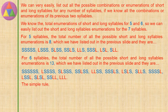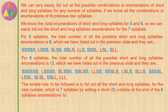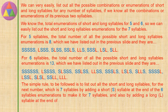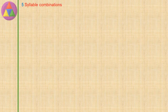The simple rule is: to get all enumerations for seven syllables, add a short syllable S at the end of all six-syllable enumerations (giving 13 new enumerations), and also add a long syllable L at the end of all five-syllable enumerations (giving 8 new enumerations). Combining both new sets gives all 21 enumerations of seven syllables.